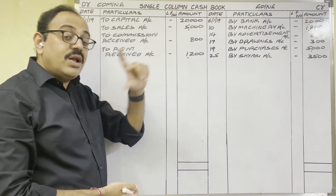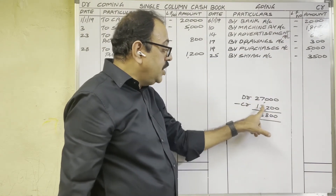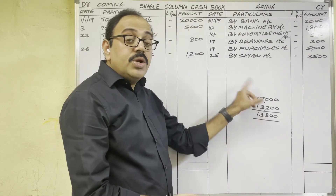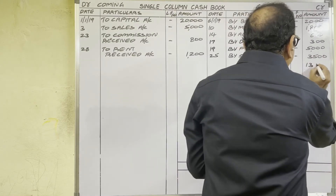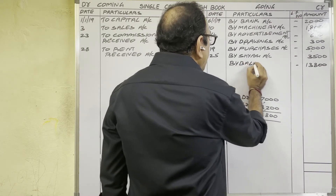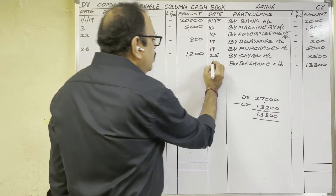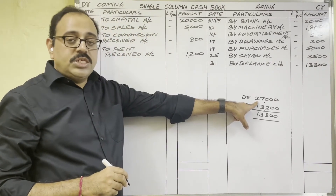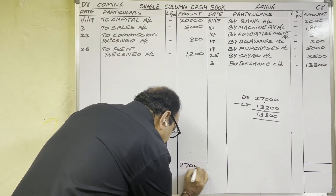Next step is balancing. The debit side total is more. In rough work: debit total is 27,000 rupees; credit column total is 13,200 rupees; the difference is 13,800 rupees. We write the difference on the side whose total is less — that is the credit side. Write: 'By Balance Carried Down', date 31st January — the last date of January — amount 13,800 rupees. Both sides now total 27,000 rupees.